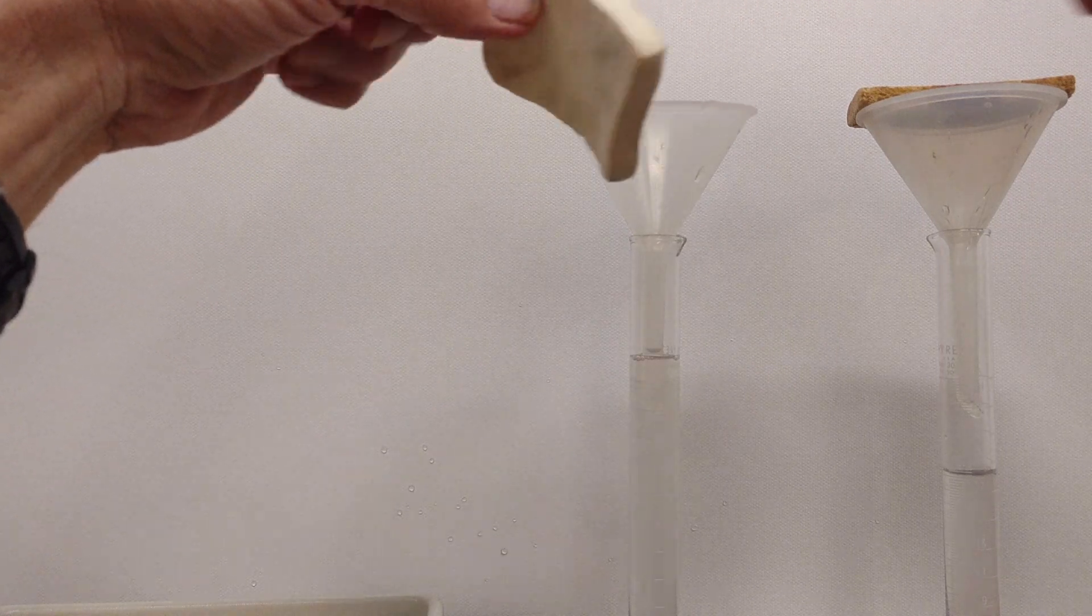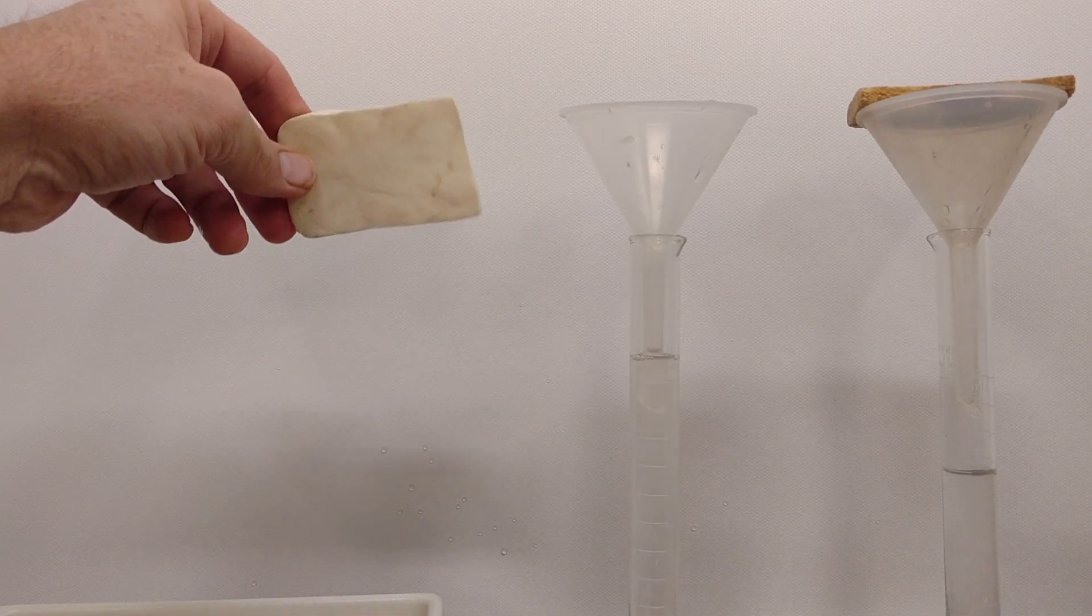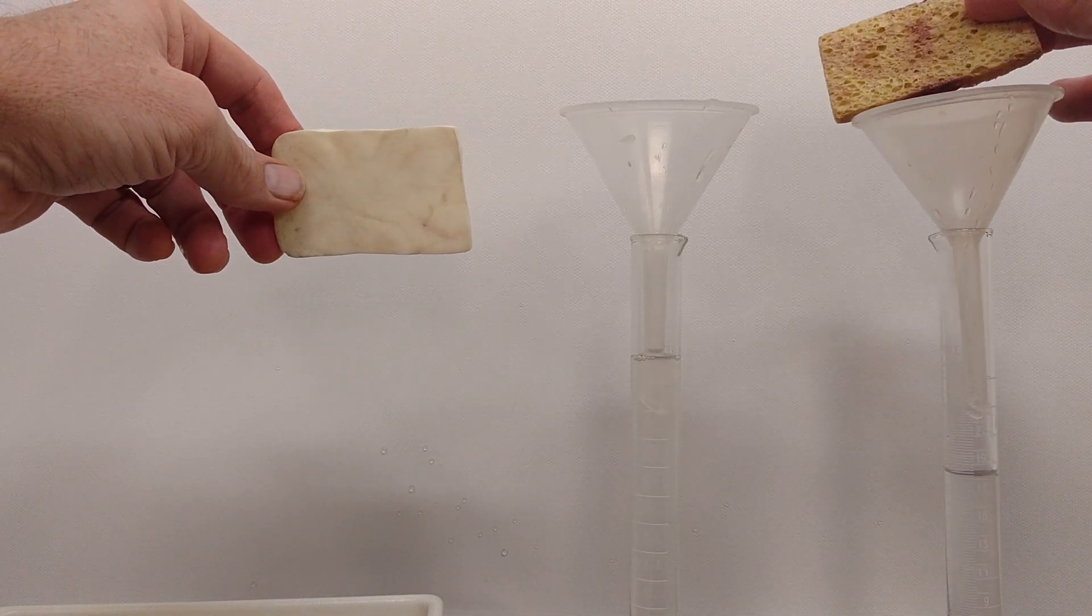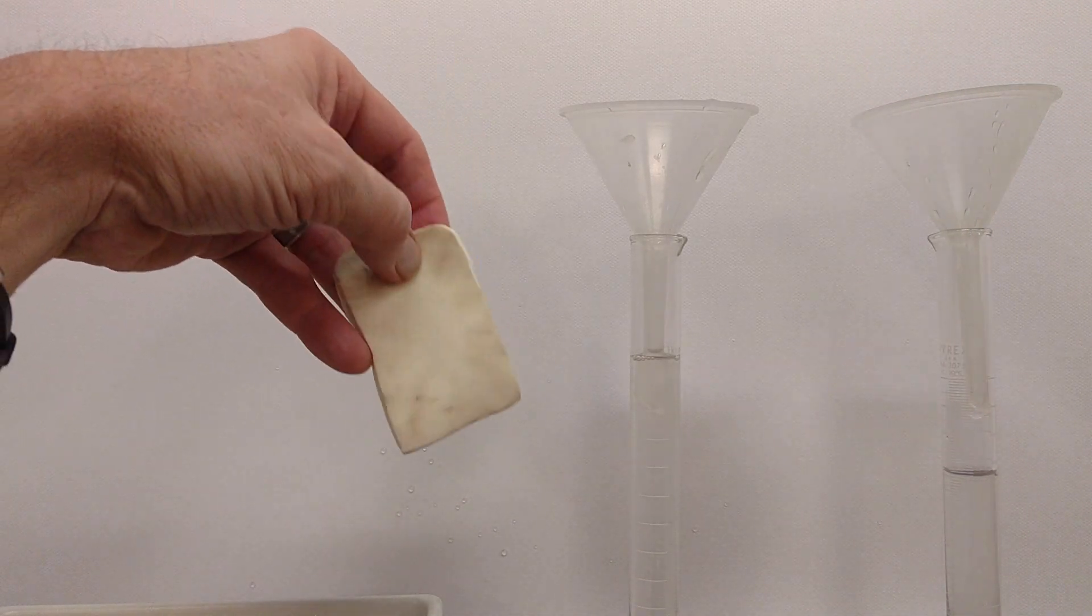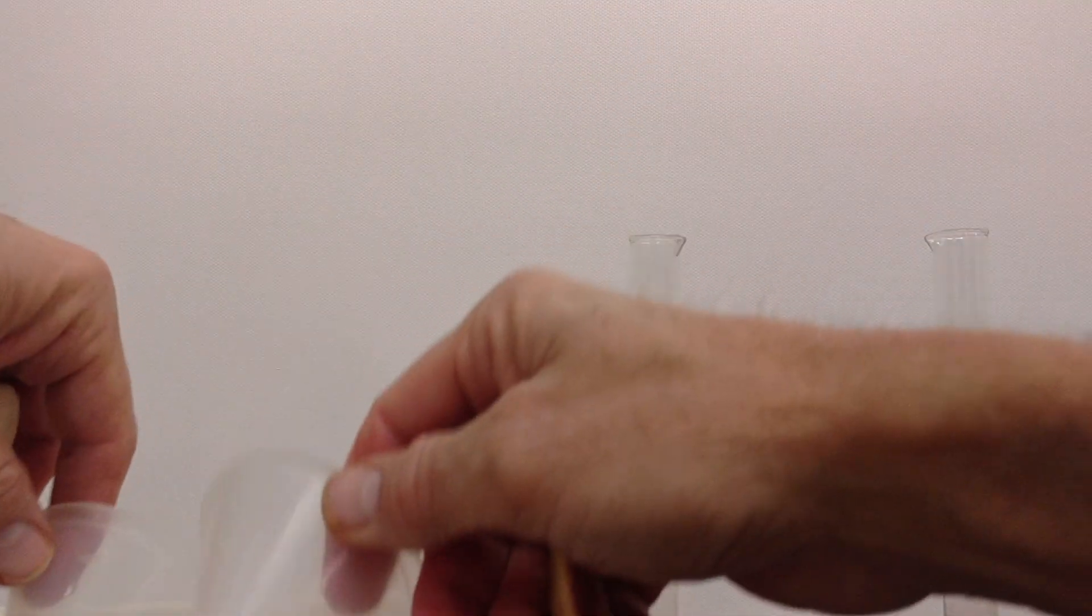Now at this point both of my sponges are as dry as I can make them by squeezing them. Our analogy for the soil is that it would be as dry as it can be from plants extracting water.